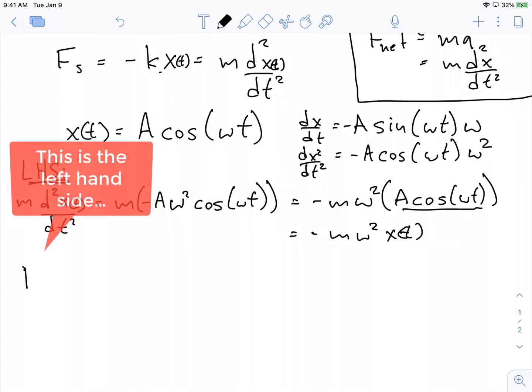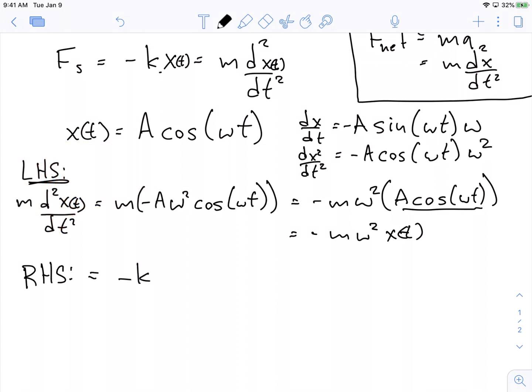The right hand side is equal to negative k times x of t. When are these equal to each other? Well, if k is equal to m omega squared, which implies that omega squared is equal to k over m. If this is true, then these sides are equal to each other.